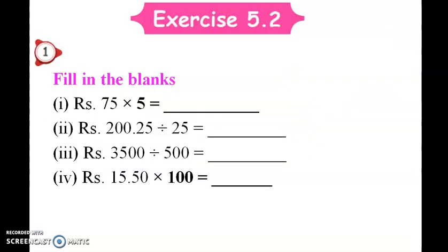The first section is fill in the blanks. Rupees 75 into 5, rupees 200.25 divided by 25. So the first one involves division: 1,50 into 5 gives 3,50. Rupees 300.75 — that is the end of that division. You will get 10,000, it is 1,00,000.